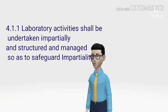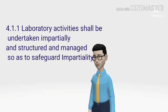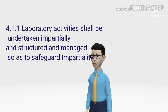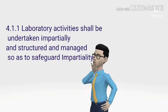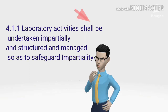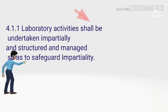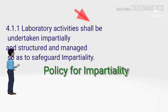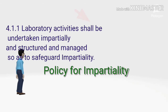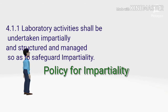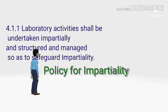As per clause 4.1.1: laboratory activities shall be undertaken impartially and structured and managed so as to safeguard impartiality. ISO has used the word 'shall be,' demanding an impartiality policy, an internal quality system procedure to avoid conflict of interest, identification of risk areas where impartiality may be compromised, and a safeguard approach to reduce impartiality risks.